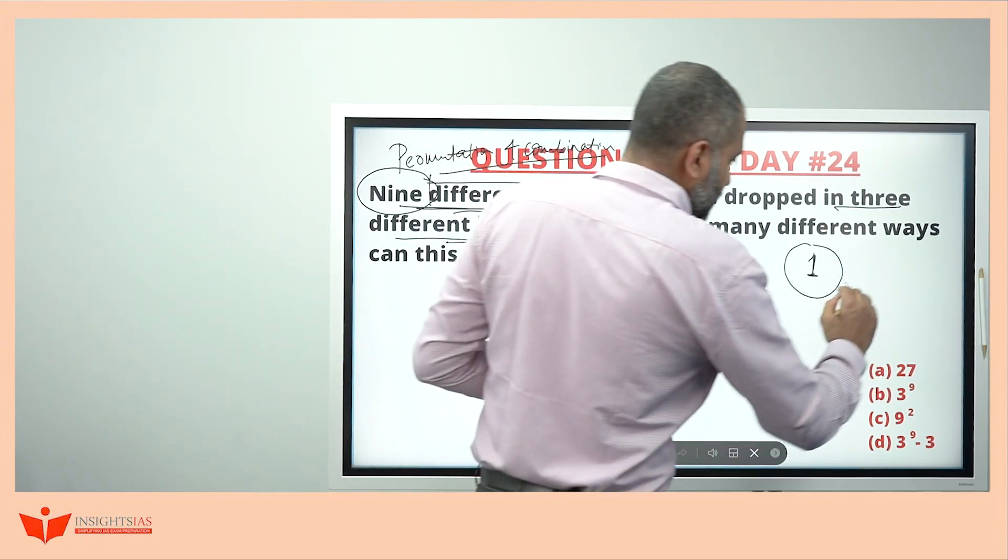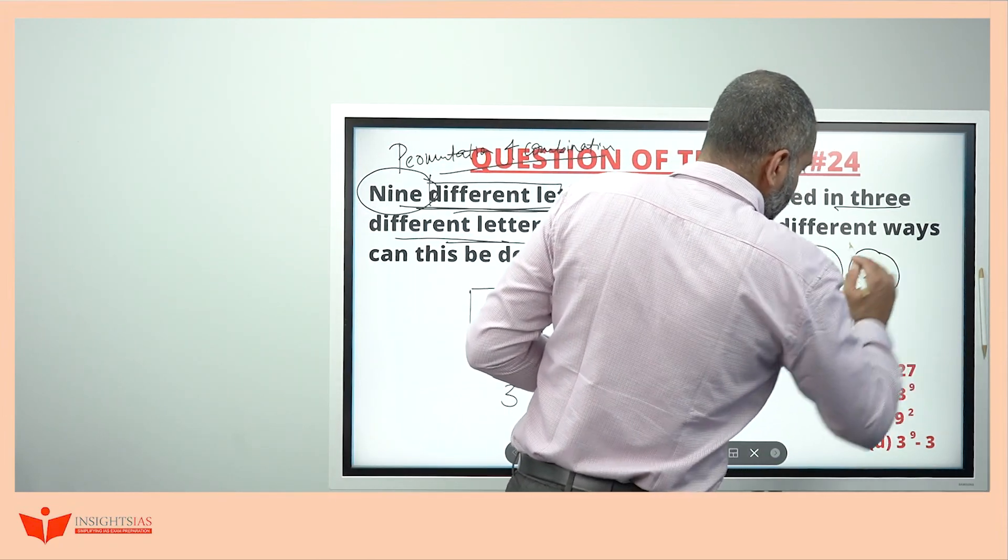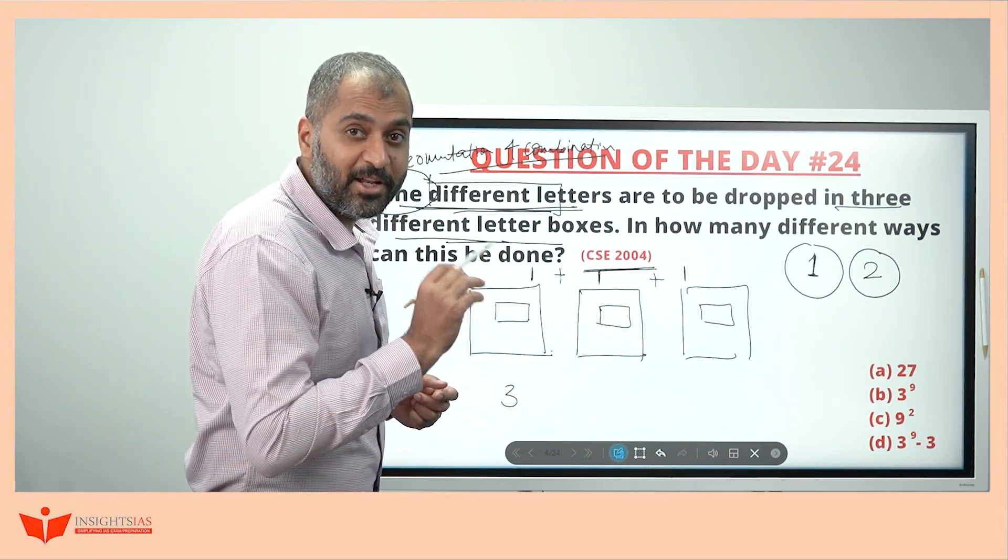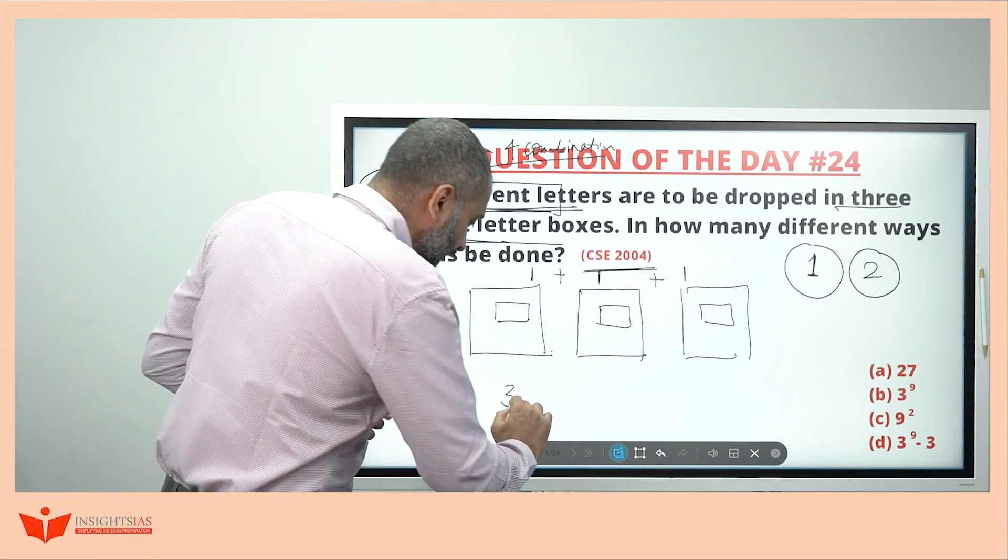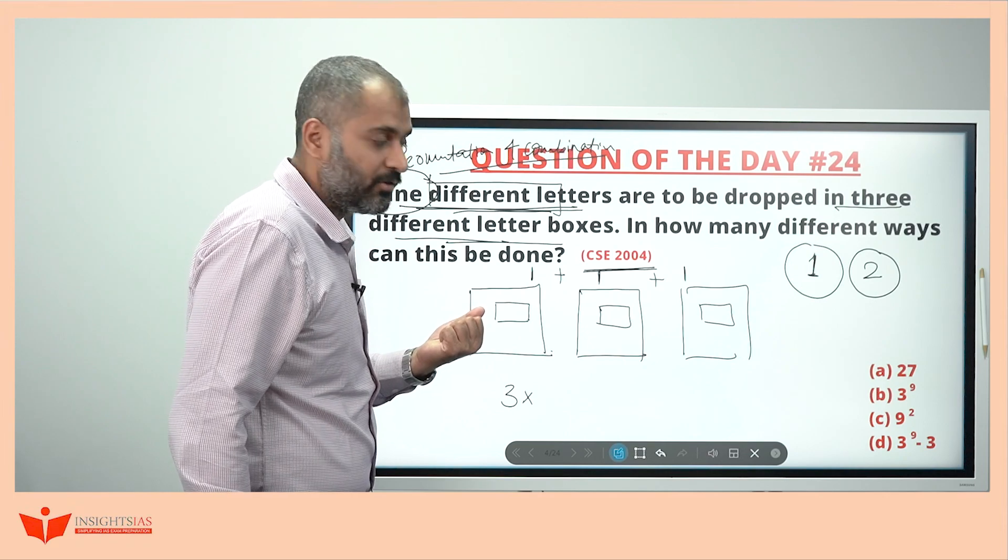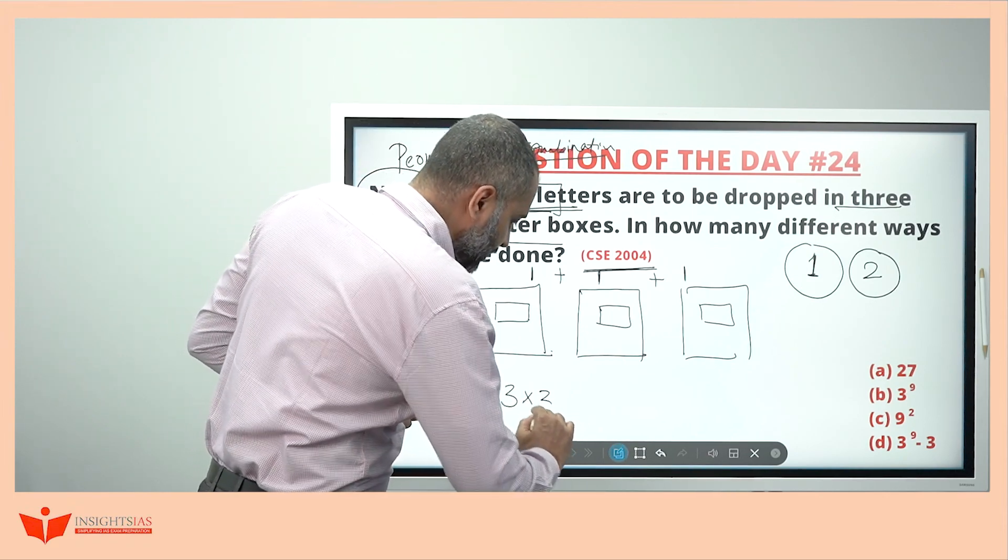Now you are going to take the second one, letter number two. Similarly, you have how many? And. Similarly, you have how many? And is multiplication. Or is addition. Always and is multiplication. You have three choices similarly.